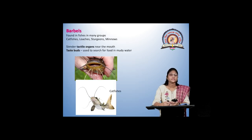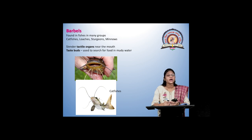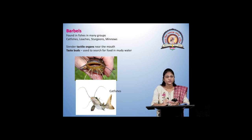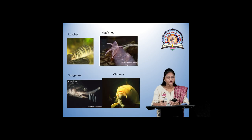The next organ is barbels. Barbels are important because they are tactile organs located near the mouth. They show taste function, used for searching for food in muddy water. Examples are catfishes, loaches, hagfishes, sturgeon, and minnows. They show variation in their barbels.